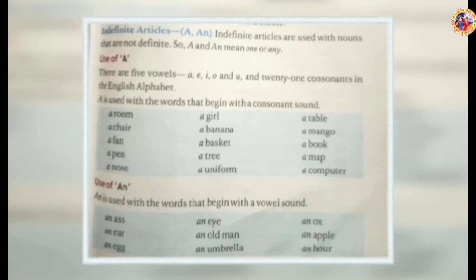Indefinite articles are used with nouns that are not definite. A is used with nouns that begin with a consonant sound. There are five vowels — A, E, I, O, U — and 21 consonants in the English alphabet.